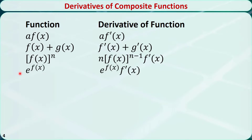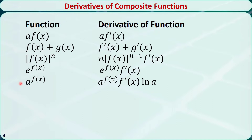The derivative of e to the power of f(x) is e to the power of f(x) times the derivative of f(x). The derivative of a to the power of f(x) is a to the power of f(x) times the derivative of f(x) times the natural logarithm of a. The derivative of the natural logarithm of f(x) is the derivative of f(x) over f(x).